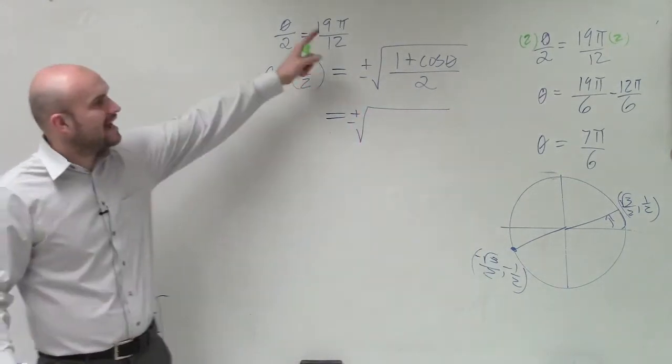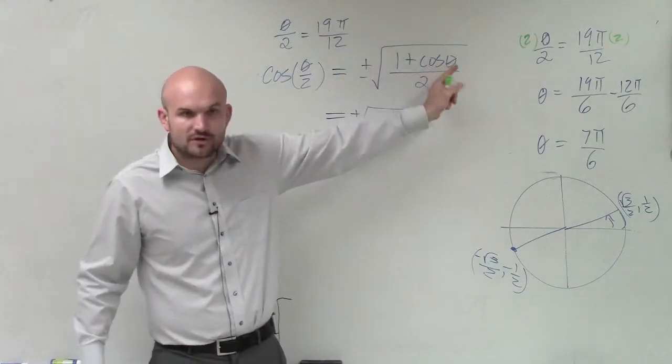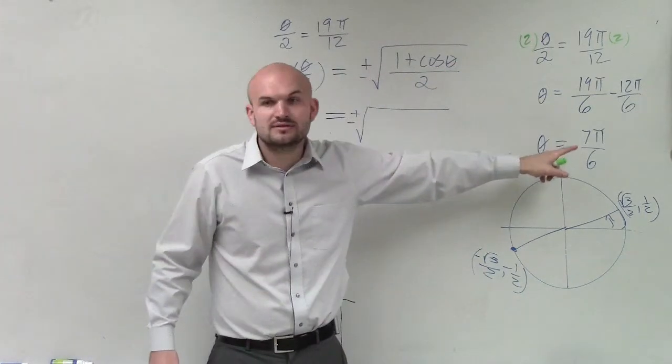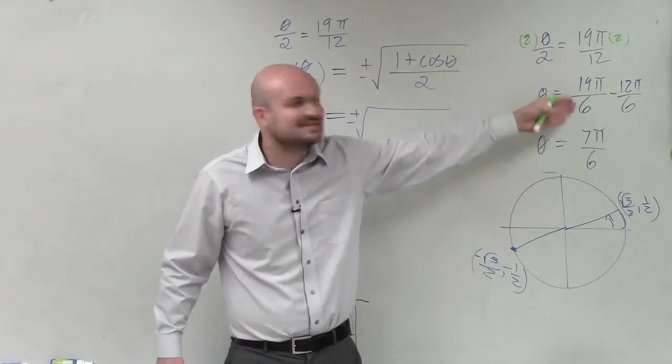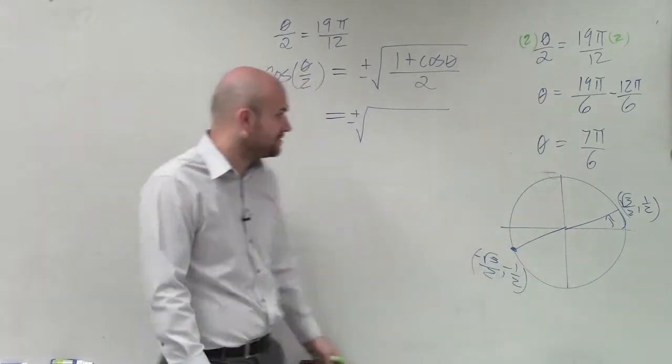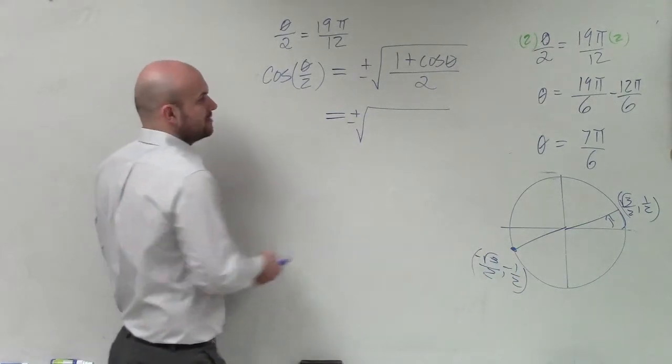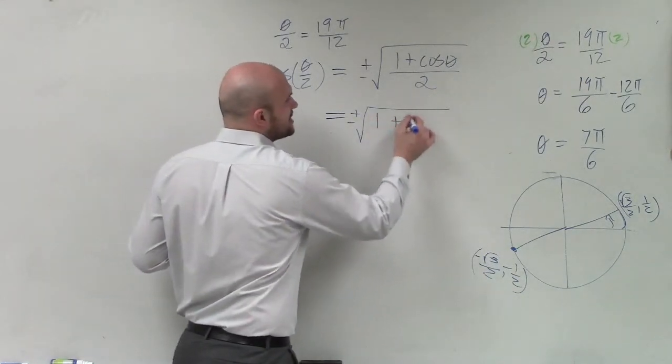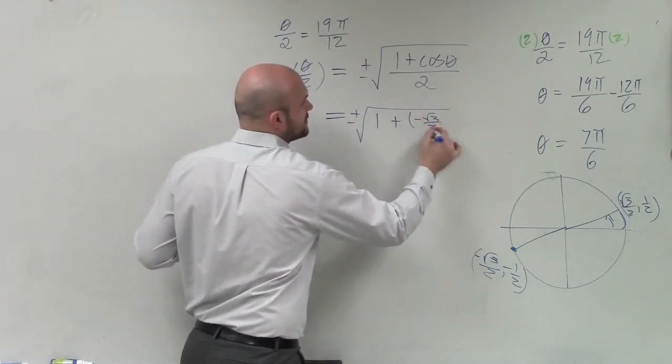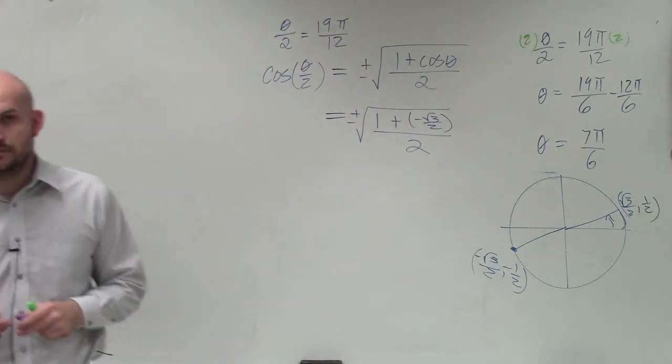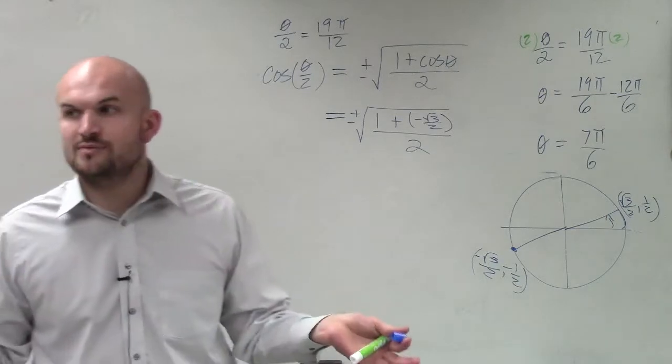So what I want you guys to do is now we plug that in. We do not plug in 19π over 12 for cosine of theta or try to evaluate. We need to evaluate for the 7π over 6 or 19π over 6, whichever way you want to think about it. And when we did that, we got cosine as negative square root of 3 over 2. So what I have is the square root of (1 plus negative square root of 3 over 2) divided by 2.